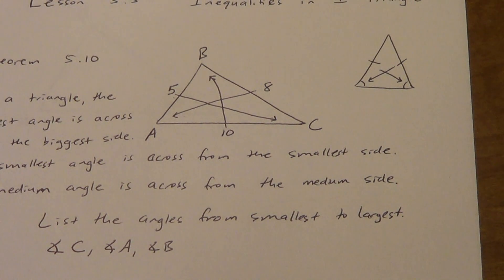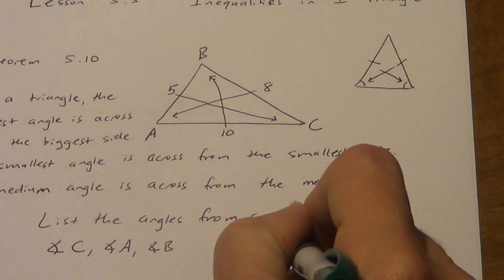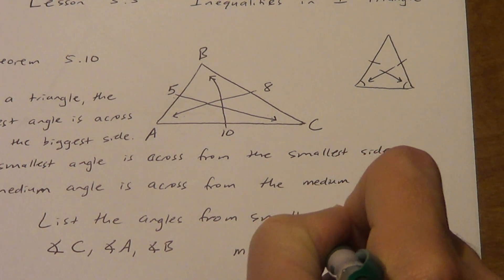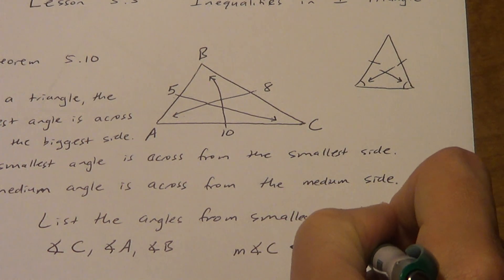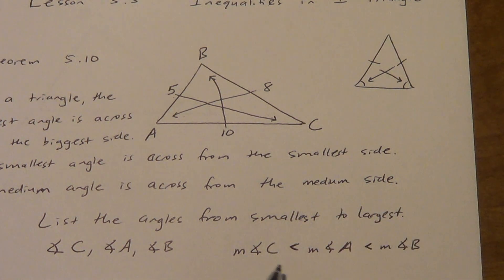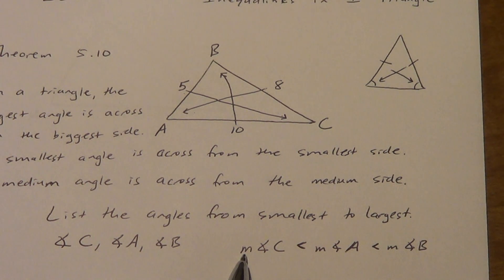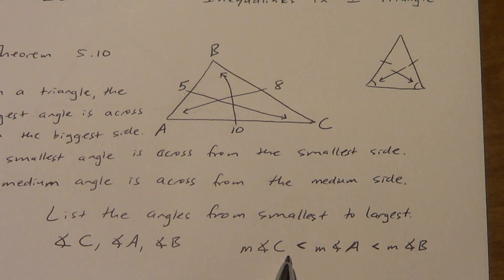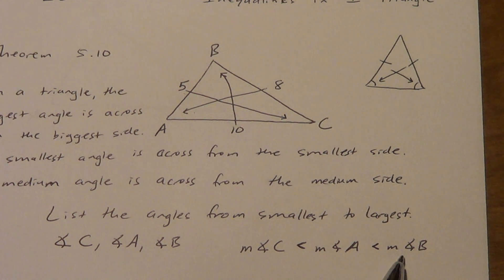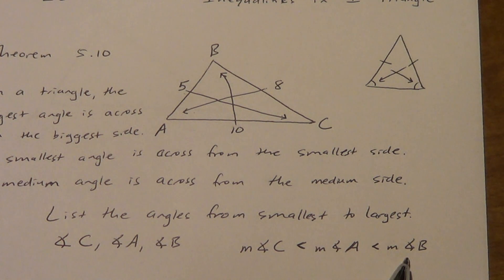You could also write it using less-than signs. Remember at the beginning I said we might use less than and greater than signs. So we could say the measure of angle C is less than the measure of angle A, which is less than the measure of angle B. When we use equals we use M for measure, and the same applies with less than or greater than. Or we can list them with commas — either way works. The transitive property holds, so angle C is less than angle B as well.